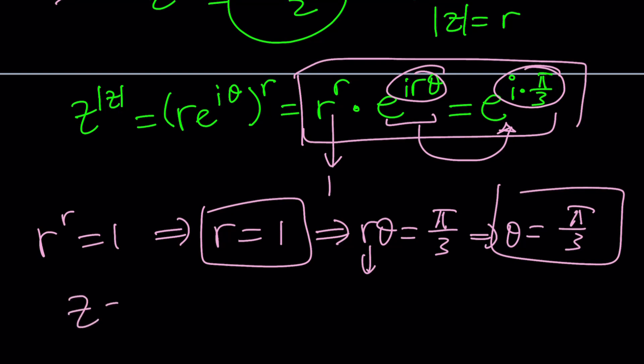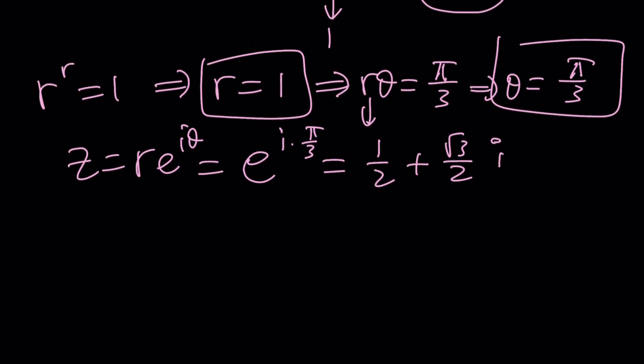Z is r e to the i theta, which is e to the i pi over three, which is one over two plus root three over two i, which is the original number given.